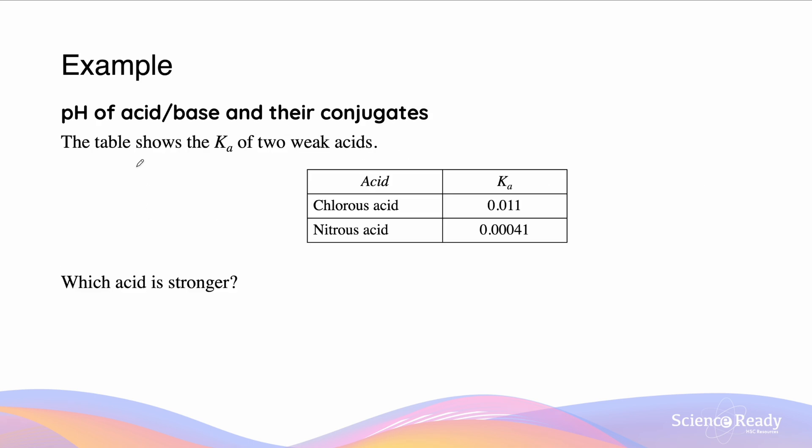So here we have an example. It says that the table shows the Ka of two weak acids. Chlorous acid is 0.011, and nitrous acid is 0.00041. The question asks us which of the following acids is stronger. And if we remember, the Ka is going to tell us as a better indicator of the strength of a particular acid. So what we can deduce from this is that chlorous acid is a stronger acid than nitrous acid.